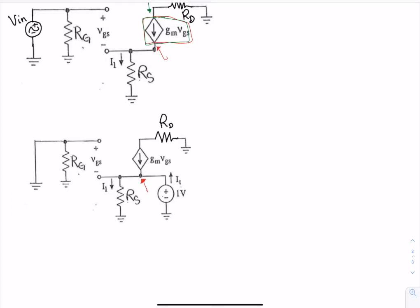Remember, for a Thevenin equivalent, we are going to remove the independent sources, and so that's going to short this over here. Then we're going to apply an external source, and we're going to solve for either, if we apply a voltage, we're going to solve for the current. If we apply a current, we're going to solve for the voltage.